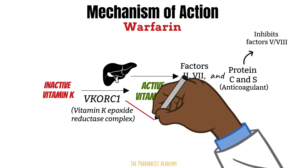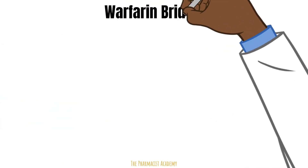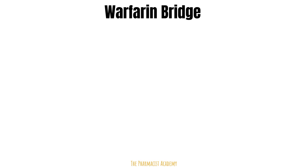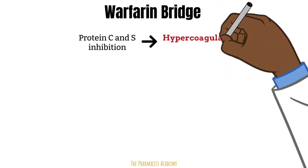Warfarin inhibits vitamin K epoxide reductase complex, depleting functional vitamin K reserves and reducing the synthesis of those clotting factors, including Protein C and S. Remember that Protein C and S are part of our natural anticoagulation, so inhibition of their production actually promotes clot formation. Because of this, we must bridge warfarin when starting initially. Warfarin bridging refers to the use of parenteral anticoagulants until full anticoagulation by warfarin is achieved, because inhibition of Protein C and S leads to an initial hypercoagulable state.